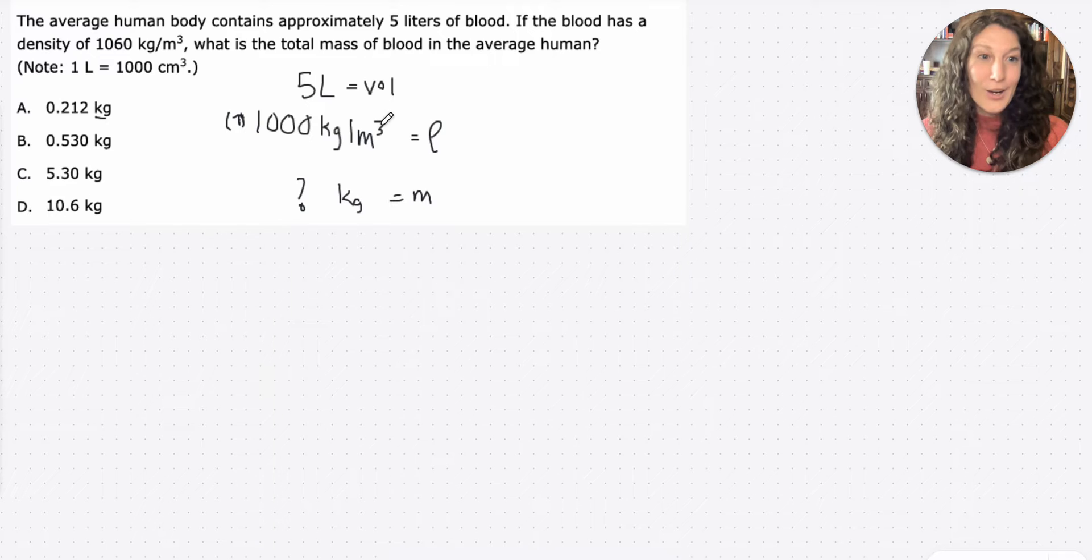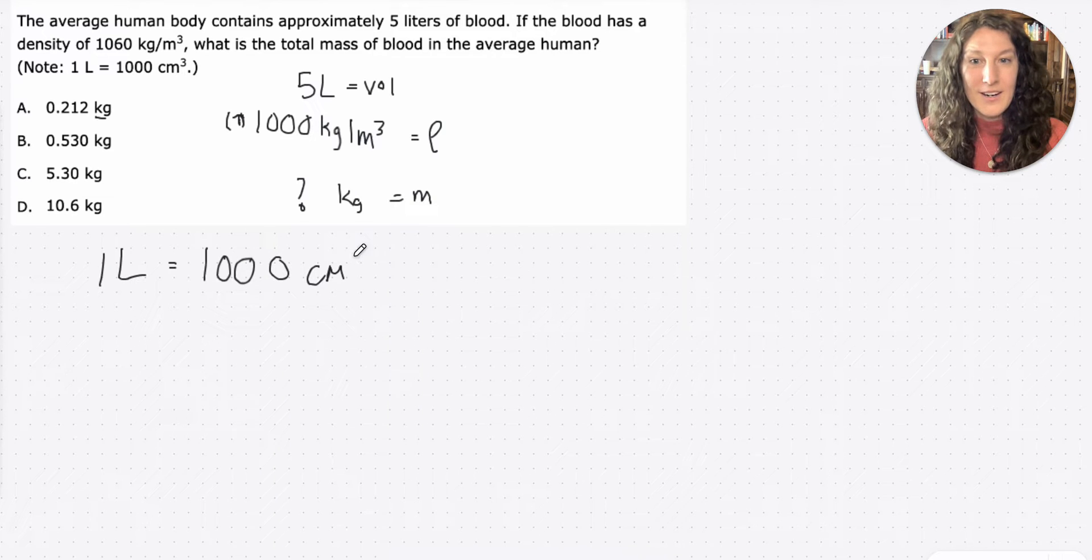We know right off the bat, we have kilograms. We just need to get rid of meters cubed, which is a volume measurement, but the volume we're given is in liters. So the hard work of this question is going to be the conversions from liters to meters cubed. They did give us a somewhat helpful conversion. Note, one liter equals 1,000 centimeters cubed. So in order to get from liters to meters cubed, we're going to need to go through centimeters cubed.